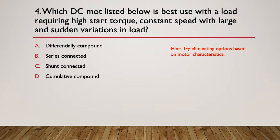So think about the motor characteristics. A, a differentially compounded motor; B, a series connected motor; C, a shunt connected motor; or D, a cumulative compound motor. So what are the characteristics of each of those four? Which one might best suit?